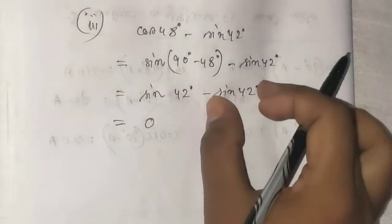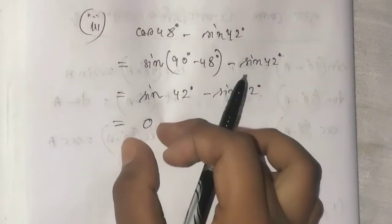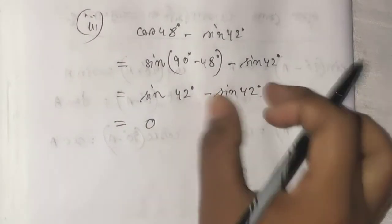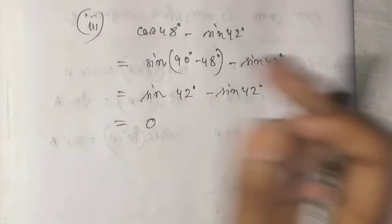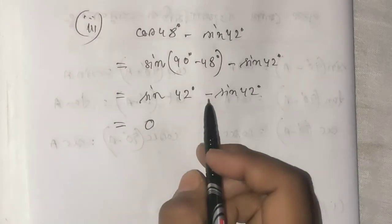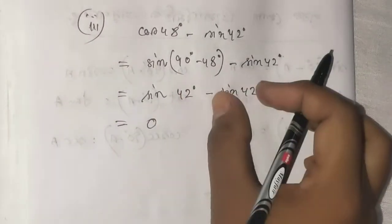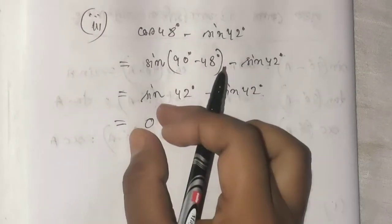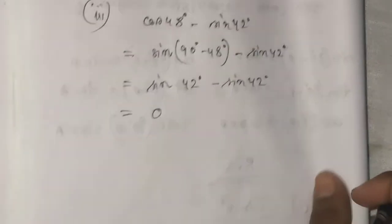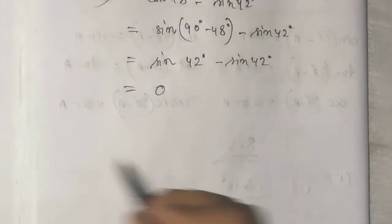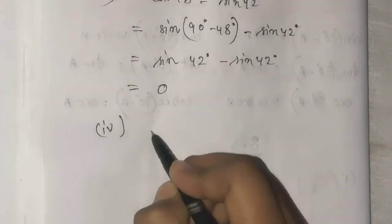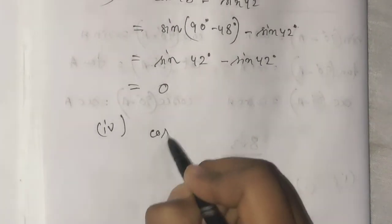So sin42° minus sin42° equals 0. The answer is zero.